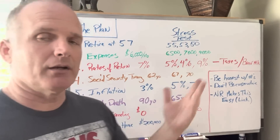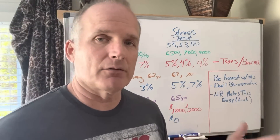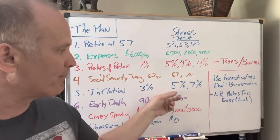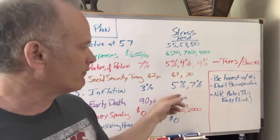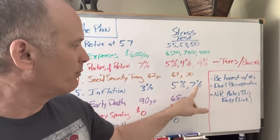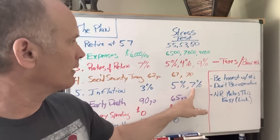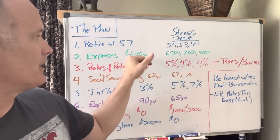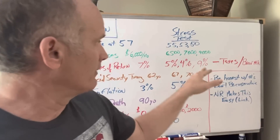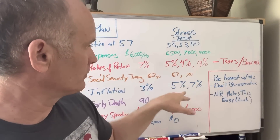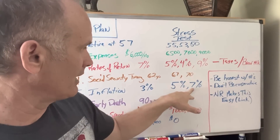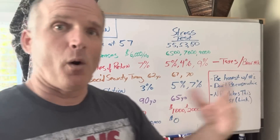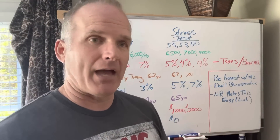Inflation — a lot of people just put in a default 3% because that's what it's been long-term. What happens? Where does the plan fail at 5% or 7%? If you put in 7% inflation, it should adjust your expenses by 7% each year, and then your rate of returns may be low. Say you put in 7% inflation and 5% returns — what happens? You need to know about that.